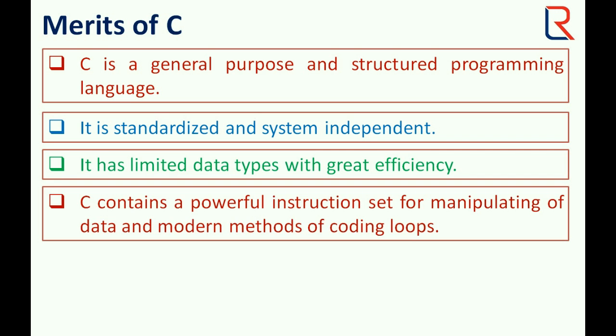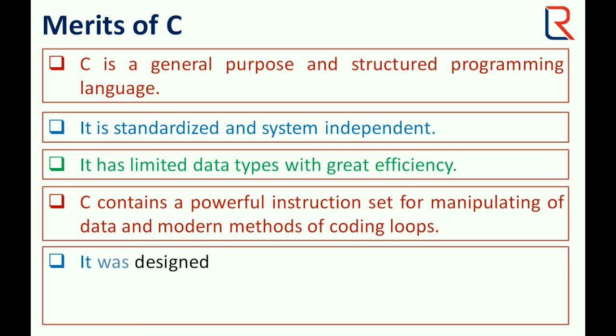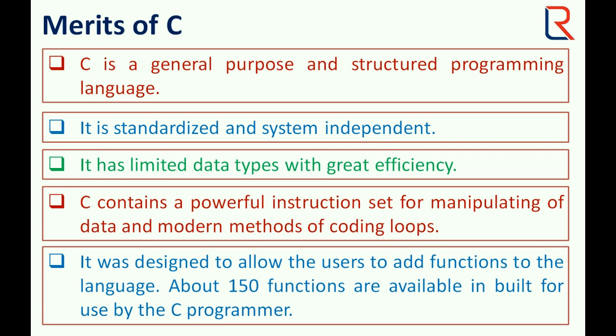C contains a powerful instruction set for manipulating data and modern methods of coding loops. It was designed to allow users to add functions to the language. About 150 functions are available inbuilt for use by the C programmer.